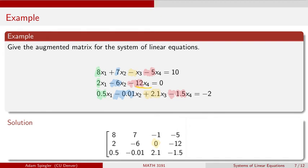The very last column is going to correspond to the constants that we have on the right side. That's going to be the 10, the 0, and the minus 2. This gives us our full augmented matrix.